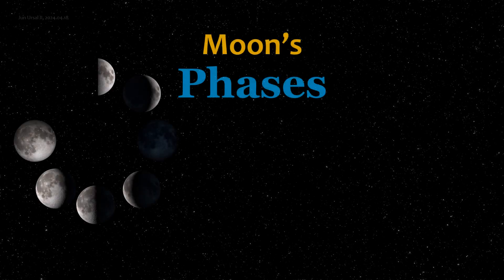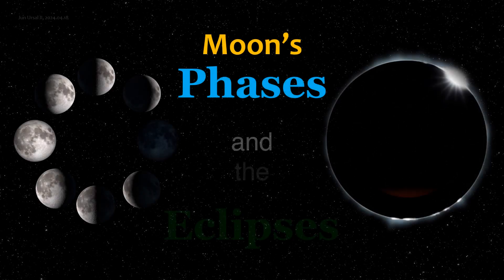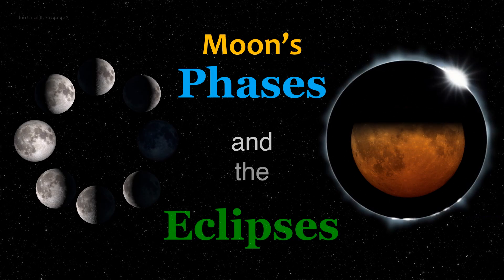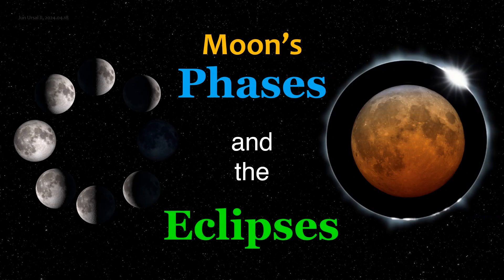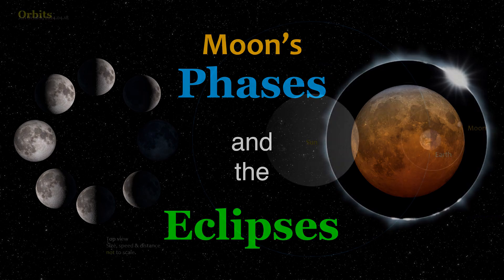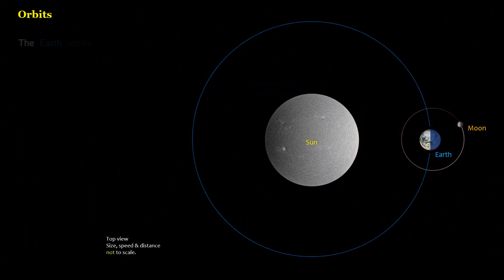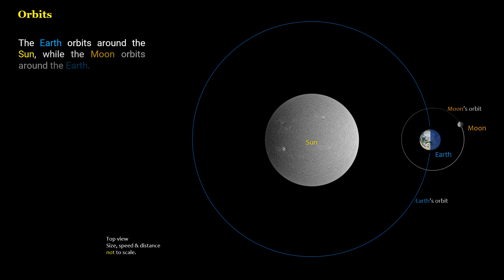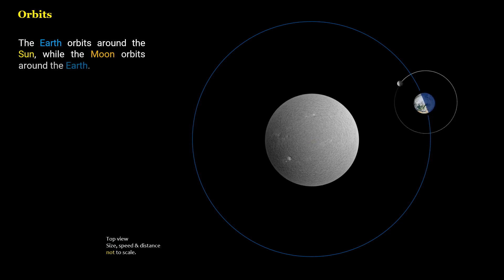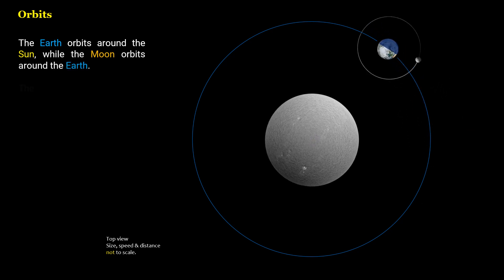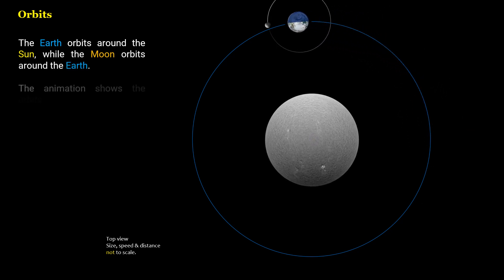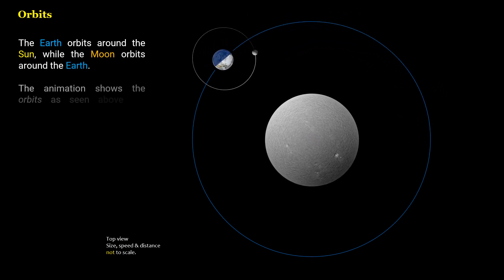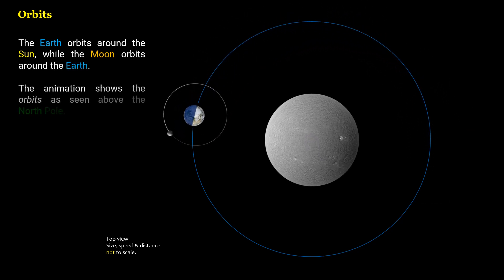Moon's phases and the eclipses. The Earth orbits around the Sun, while the moon orbits around the Earth. The animation shows the orbits as seen above the North Pole.